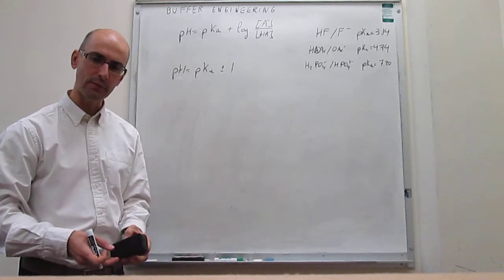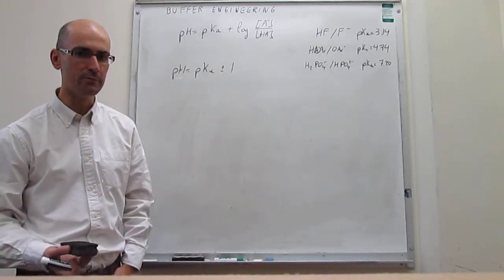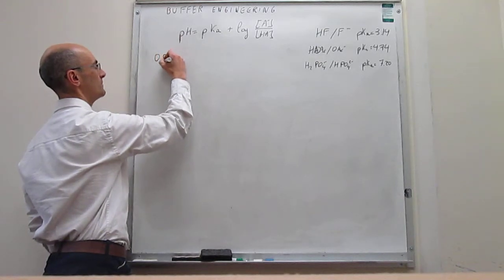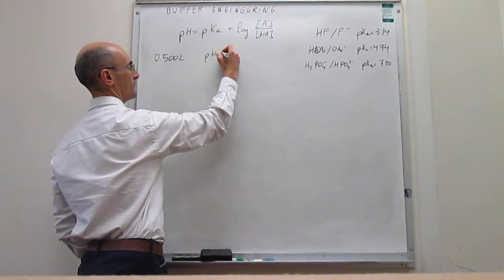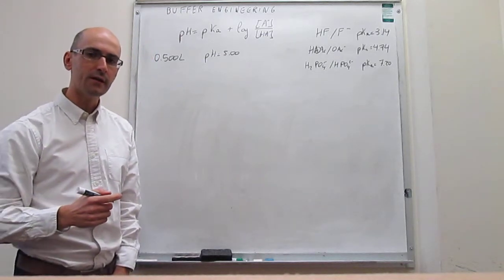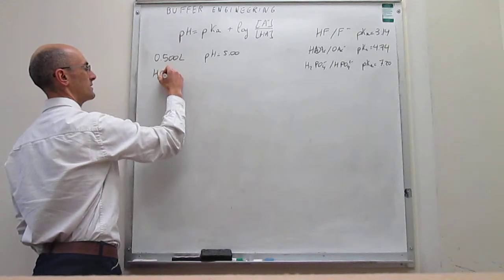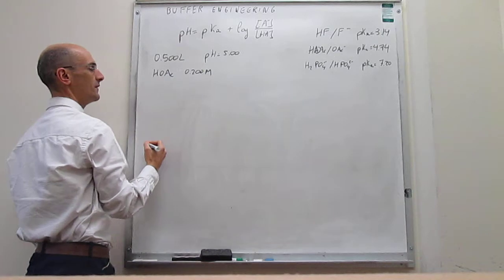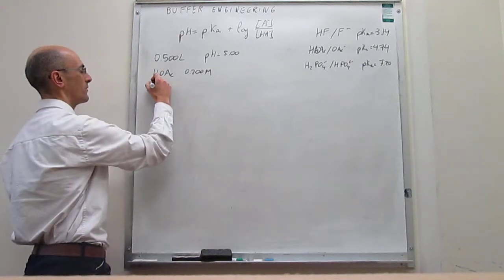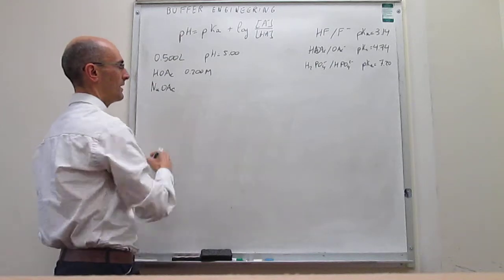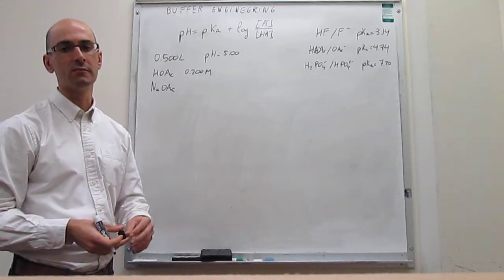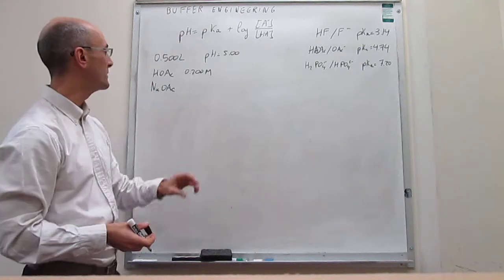Let's work through a problem to illustrate this methodology. We want to make half a liter of a buffer solution at pH 5. We have two ingredients: a stock solution of acetic acid at 0.2 M, and solid sodium acetate as the conjugate base. The question is: how much stock acetic acid solution and how many grams of solid sodium acetate do we need to combine to get a buffer at pH 5?